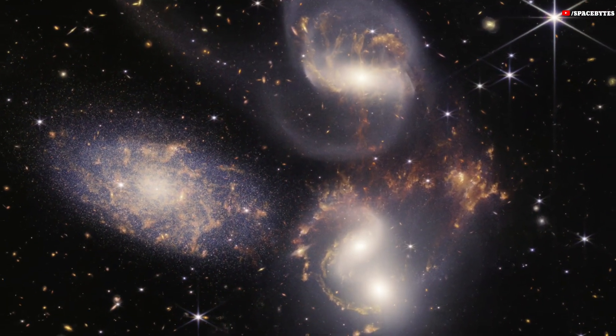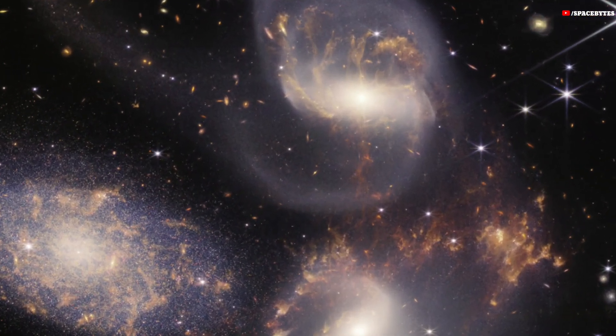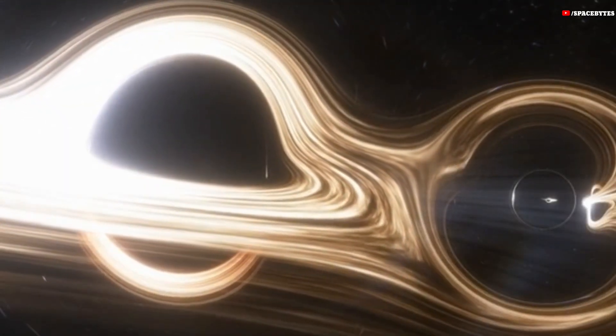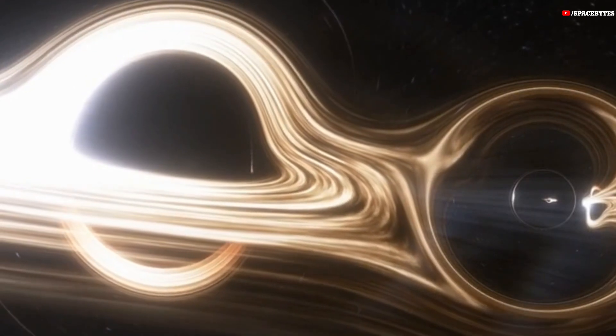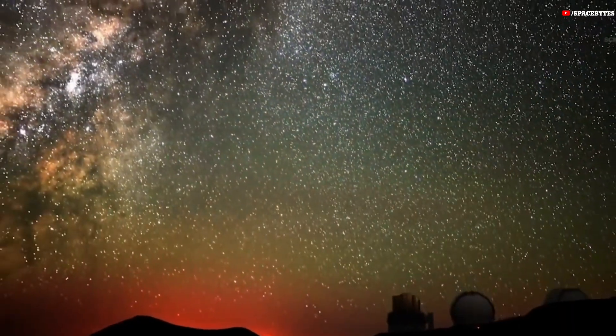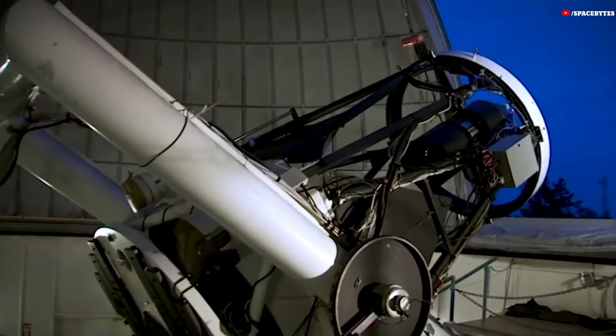This black hole has attracted significant attention due to its extreme mass and the fact that it powers one of the brightest known quasars. The quasar itself, TUN-618, is named after the Tonantzintla Observatory in Mexico, where it was first discovered.